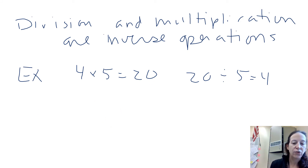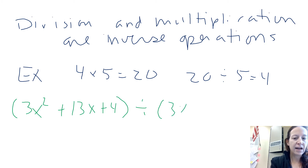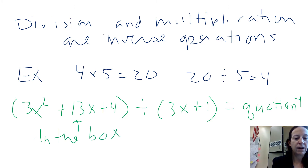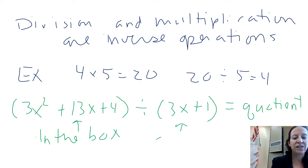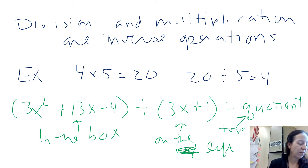So if we're going to do the problem 3x squared plus 13x plus 4 divided by 3x plus 1, we're looking for what's called the quotient. The divisor 3x plus 1 goes on the left-hand side of the box. The quotient is going to be on the top of the box. The degree of the polynomial is what dictates the number of columns — so since the degree here is 2, we're going to have two columns.